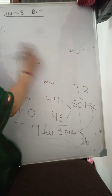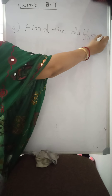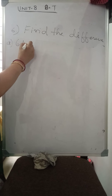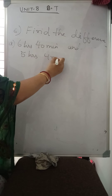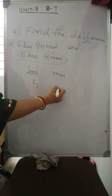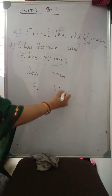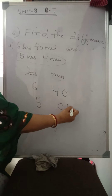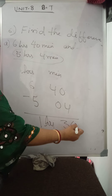Now question No. 6: find the difference. A: Six hours forty minutes and five hours four minutes. Write six hours forty minutes on top and five hours four minutes below. Forty minus four is thirty-six, six minus five is one. So the answer is one hour thirty-six minutes.